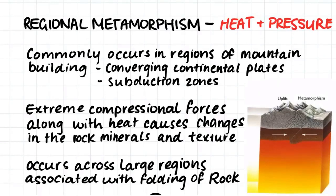Unlike contact metamorphism, regional metamorphism occurs due to both heat and pressure. It commonly occurs in regions of mountain building, where there are two converging continental plates, or where we have a subduction zone where an oceanic plate is moving below a continental plate. In these regions we have extreme compressional forces on the crust along with heat, which can cause changes in the rocks' minerals and texture.